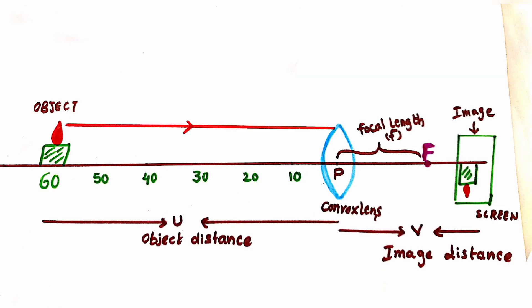Now observe the clear image of the given lab activity. The convex lens is placed on a long table; imagine the principal axis of the lens. The candle is at 60 cm from the convex lens. The distance between the convex lens and the object is called object distance, denoted by U. The image is formed on the screen of the candle's flame, and the distance between the convex lens and the screen is called image distance, denoted by V.